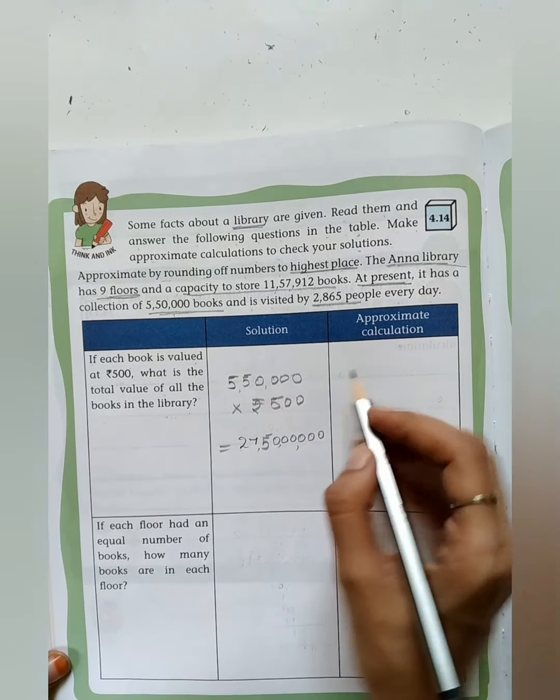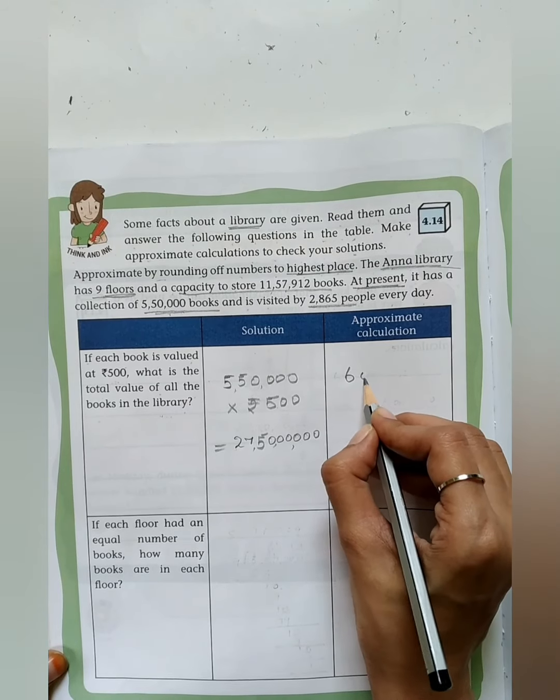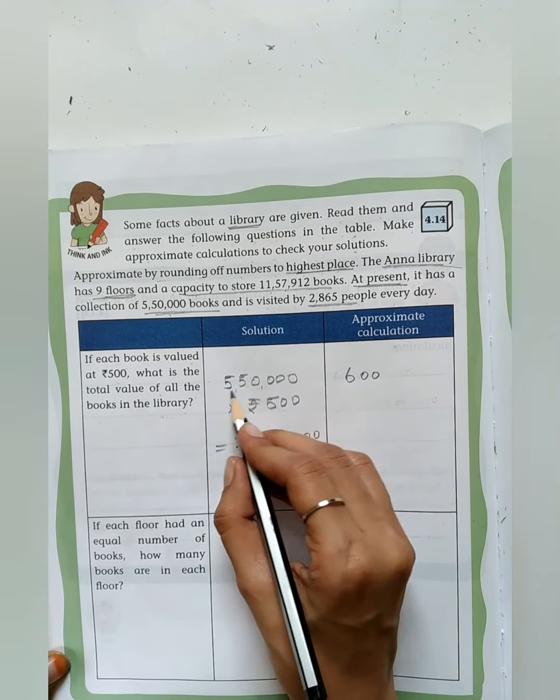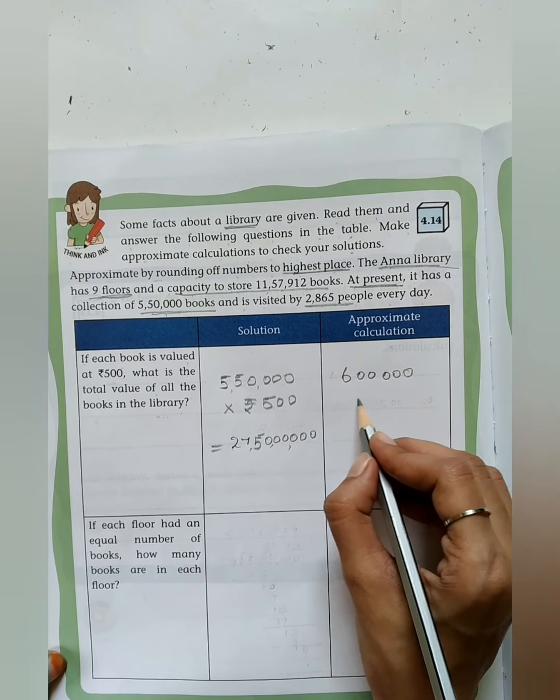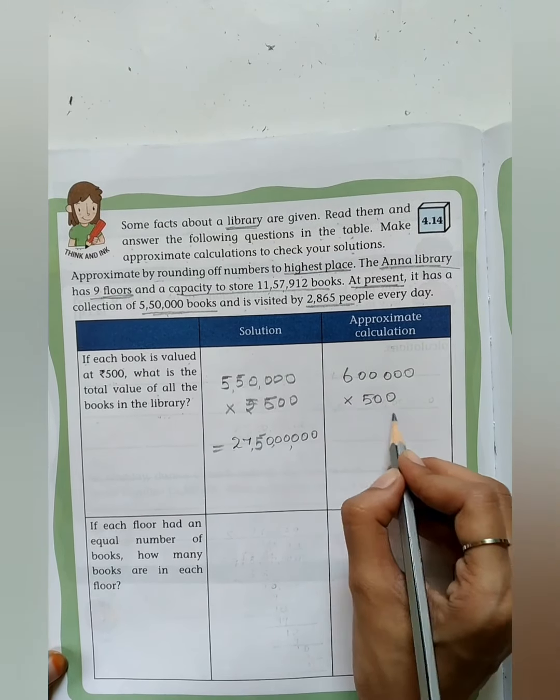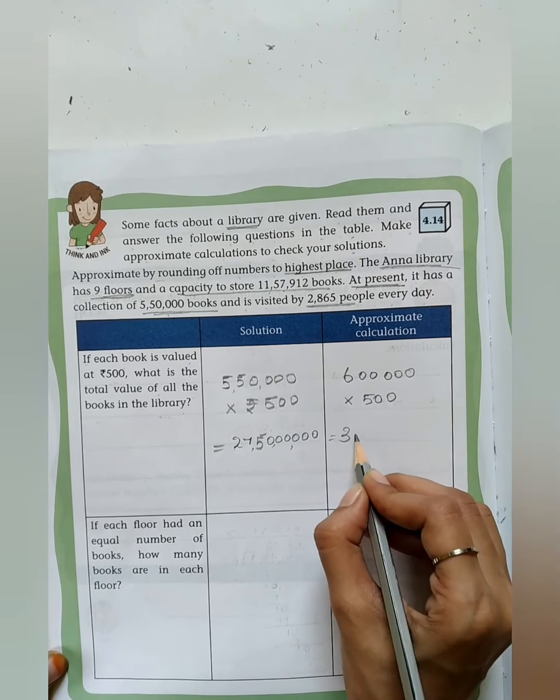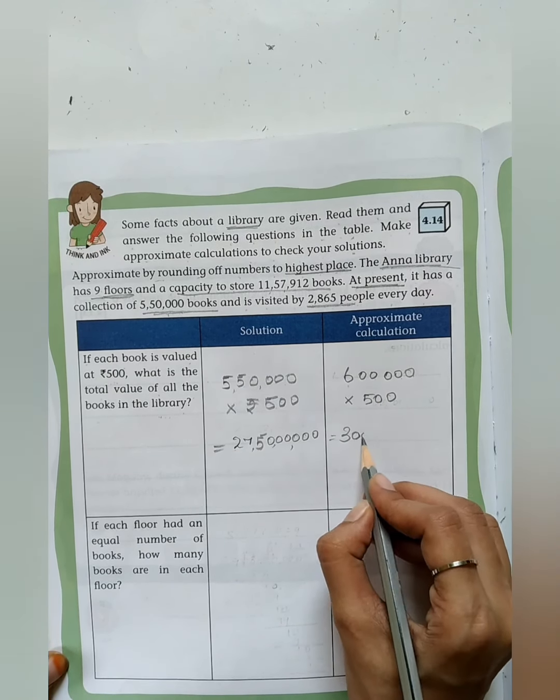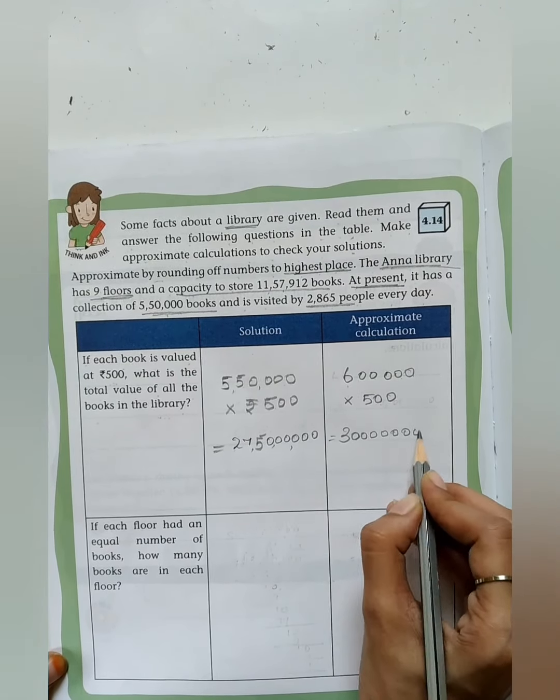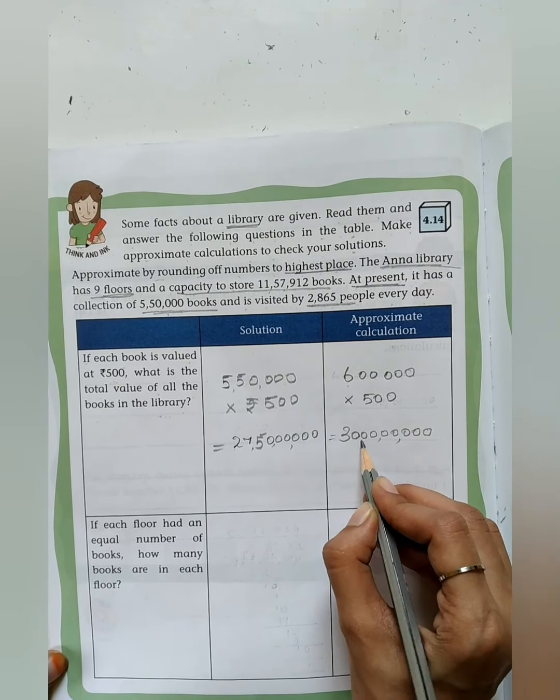Next we have to calculate the approximate calculation. I am just rounding off to the highest place. 5,50,000 will become 6 lakh into 500. If you round off, you will get the answer as 500. 6 times 5 is 30. I am just multiplying directly and adding the zeros here. Totally seven zeros. After that insert the commas.